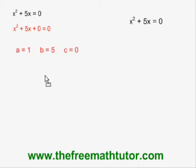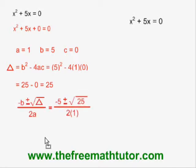I plug them into the formula for the discriminant delta, and simplifying, I get delta equals 25. I then plug a, b, and delta into the quadratic formula, and upon simplification, I get two answers: negative 5 or 0. These are the roots of this quadratic equation.